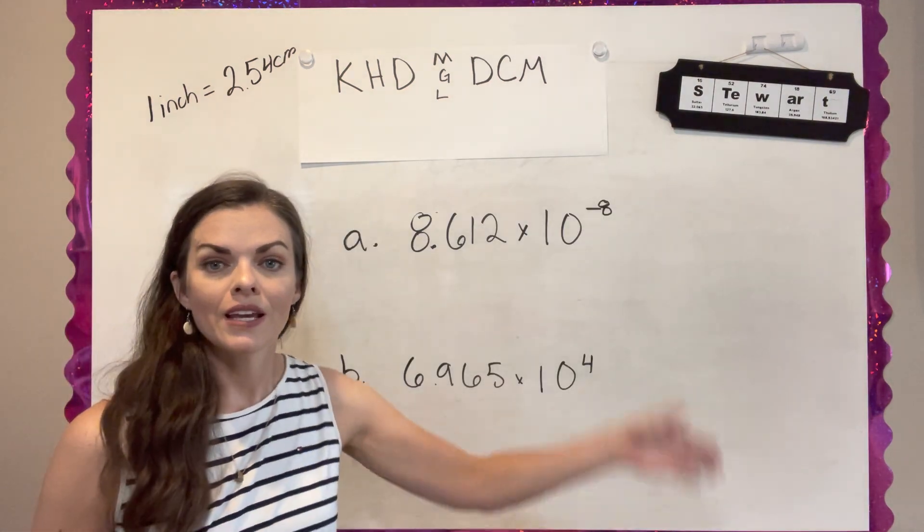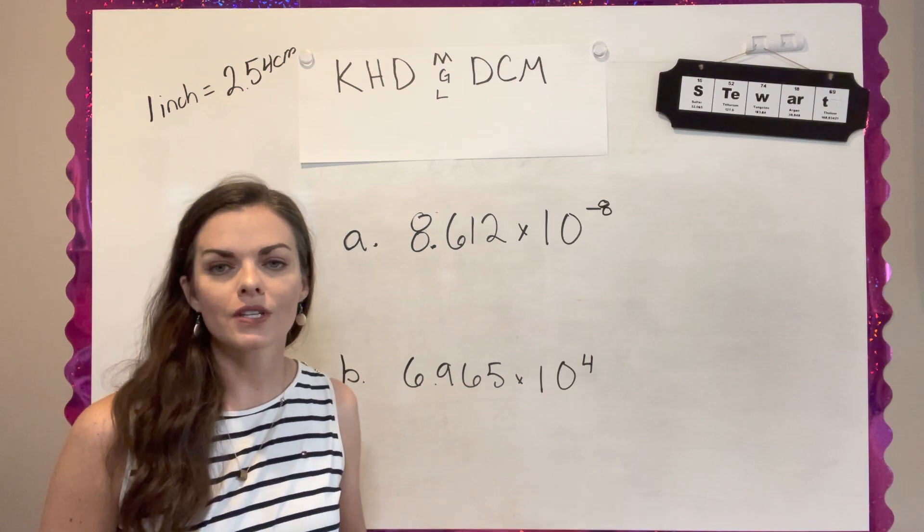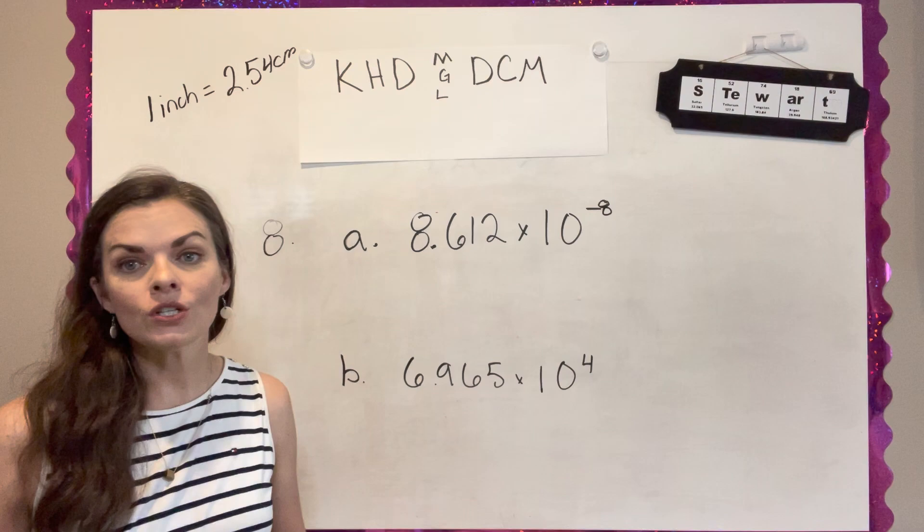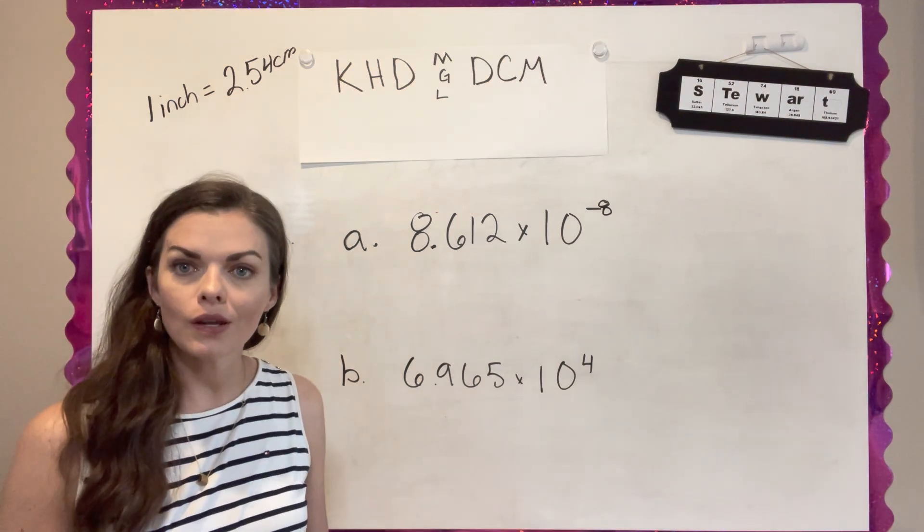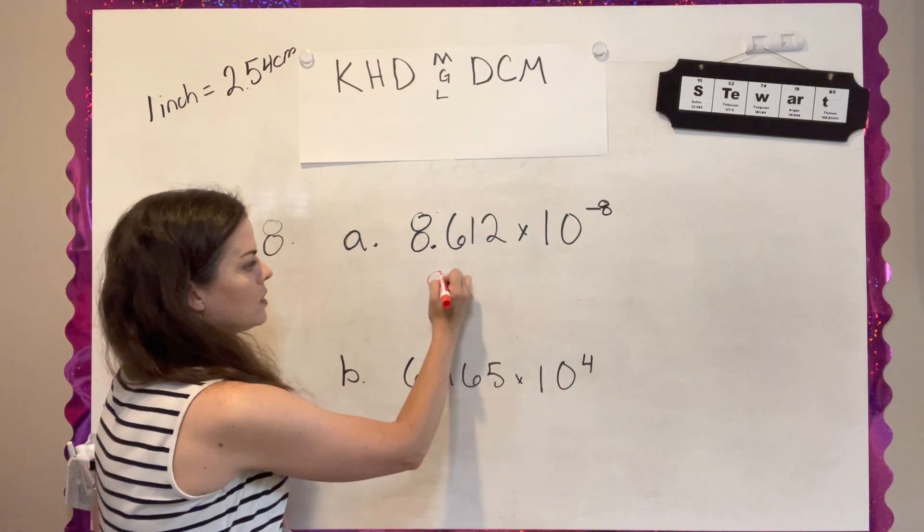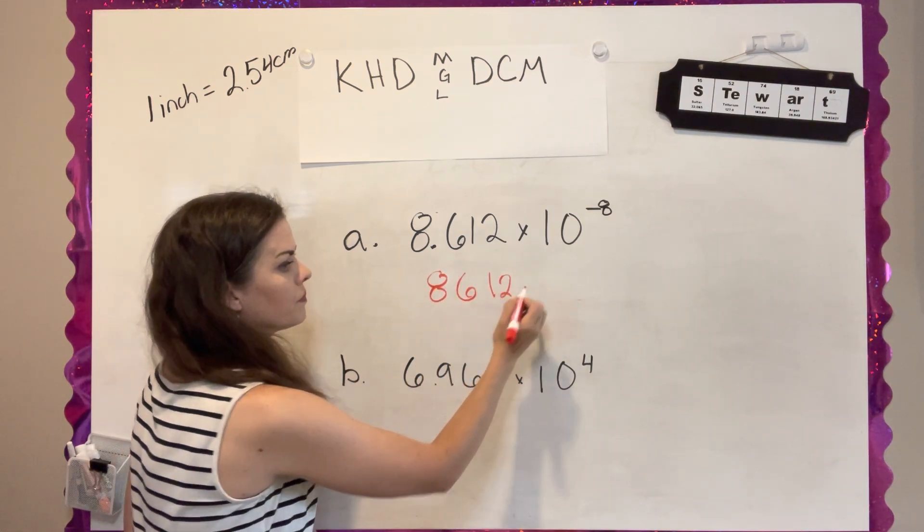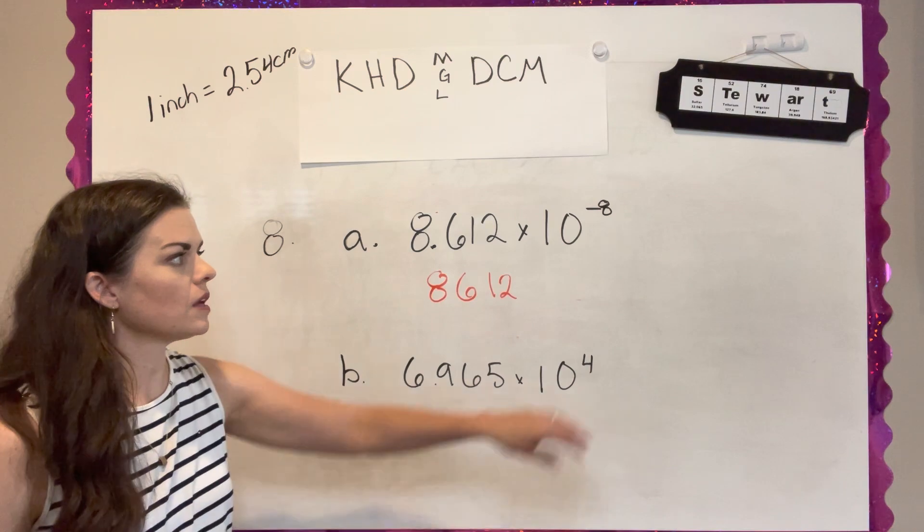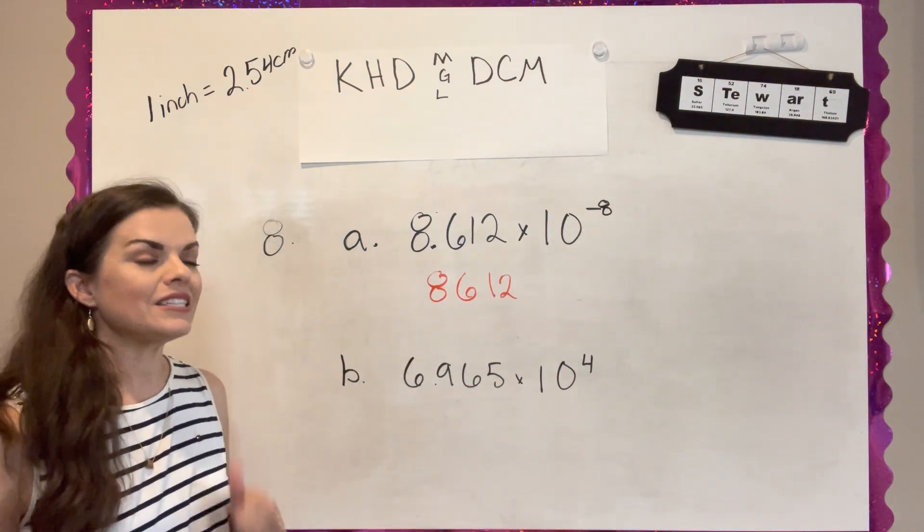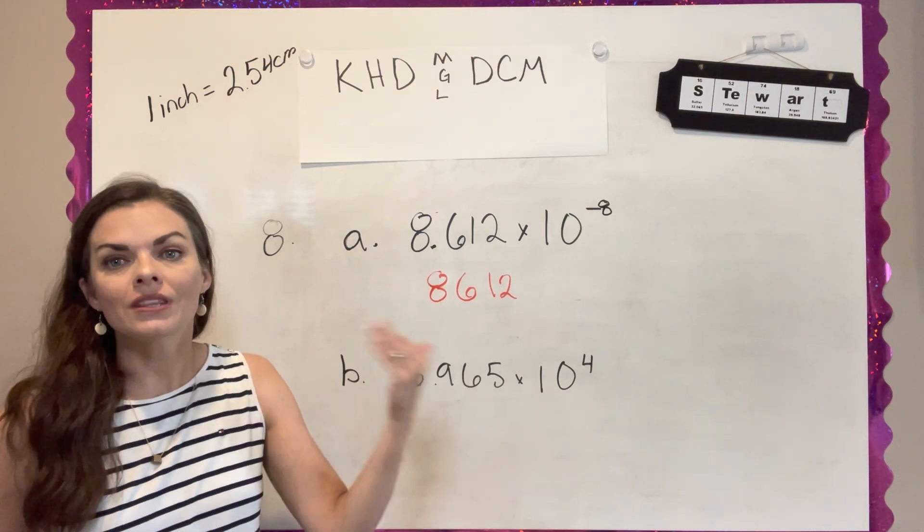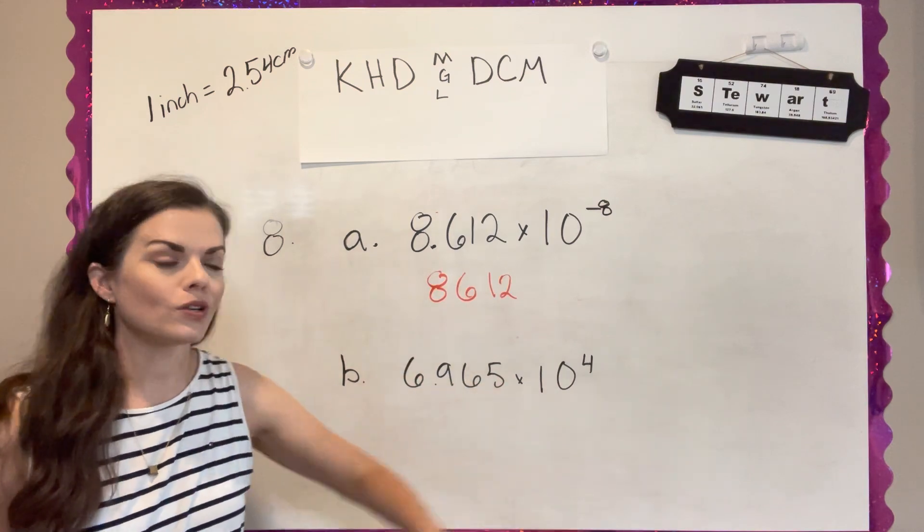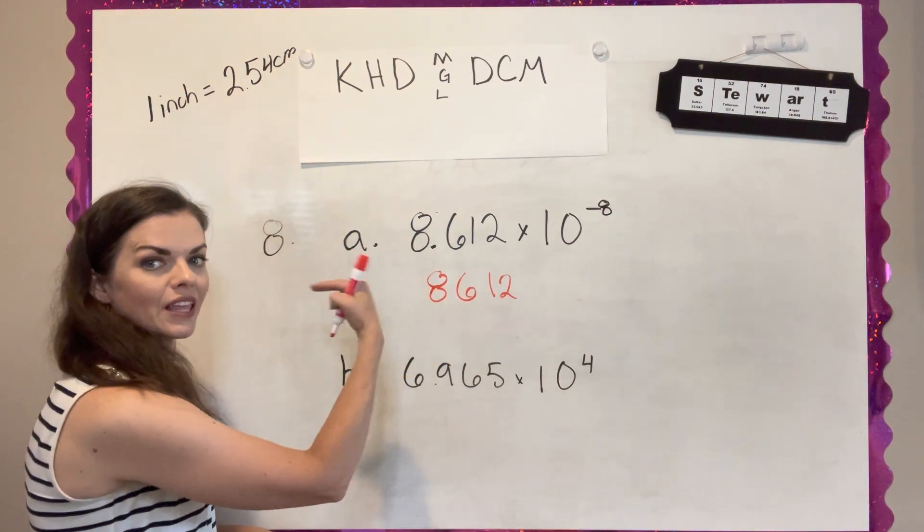Question eight, they give you the answer in scientific notation and they're wanting you to put it in standard notation. And so we're going to just basically do the opposite of what we just did in question number seven. So I'm going to start by writing the number down without the decimal. And I can see that my decimal is going to be moved eight times. And since it's a negative number, it is going to be a number less than one.